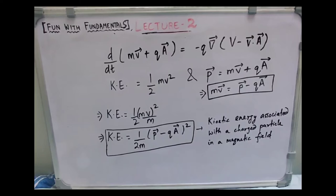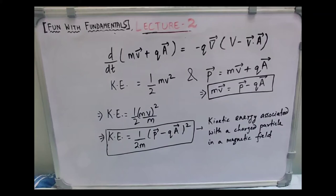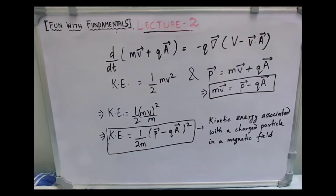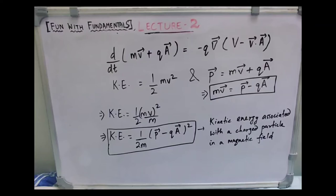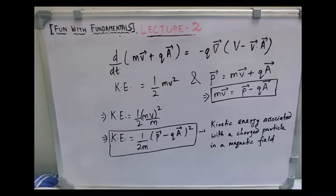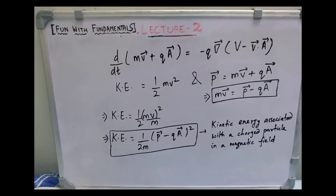Going back to the case where the charged particle experiences a non-zero magnetic field, let us evaluate the kinetic energy. Kinetic energy is given by half mv squared. Since the conjugate momentum p equals mv plus qA, we have mv equals p minus qA. Substituting back, kinetic energy becomes mv² / 2m, which is (1/2m) times (p vector minus qA vector) whole squared. This expression gives the kinetic energy of a particle with charge q moving in a magnetic field with vector potential A.